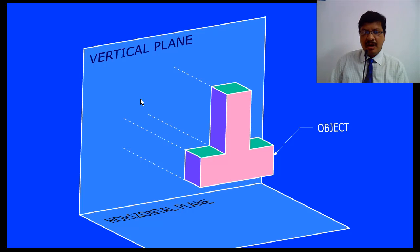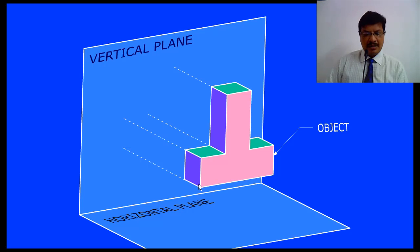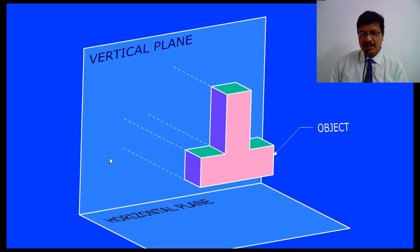What is meant by orthographic projection? Orthographic projection means when you are drawing the lines from various points on the object in such a way that the lines are parallel to each other and perpendicular to the plane of projection. The lines are parallel to each other and perpendicular to the plane of projection. Then whatever figure we have obtained on this vertical plane is called as orthographic projection.